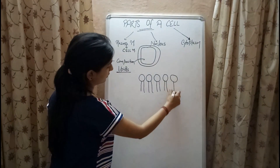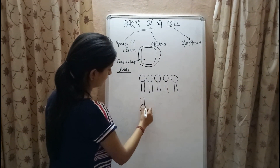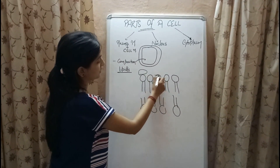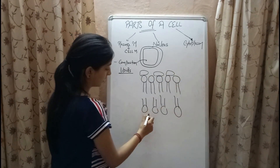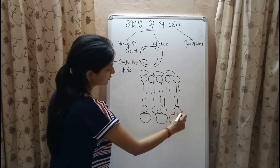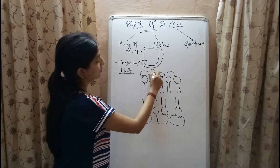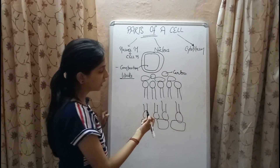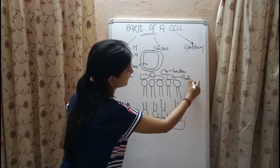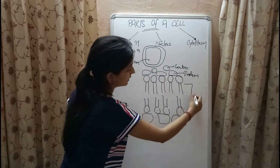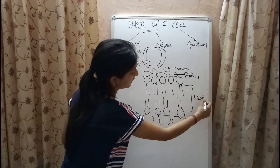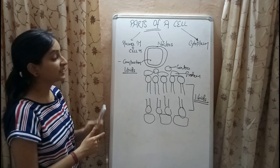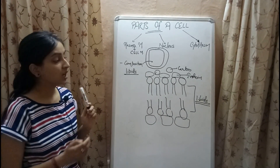The protein molecules are present on the surface of the lipid molecules, and at some places above the protein molecules are present carbohydrate molecules. These are the carbohydrate molecules, protein molecules attached with the lipid molecules, and these are the lipid molecules with hydrophobic and hydrophilic ends.